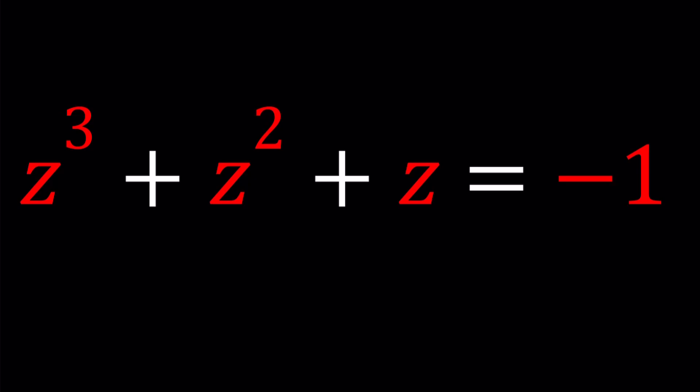So we have a number the sum of whose cube, its square and itself equals negative 1. Is that possible? Think about it, try to guess and then we'll check.